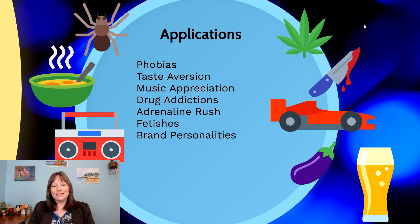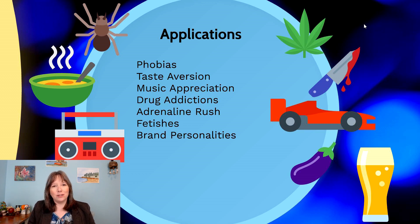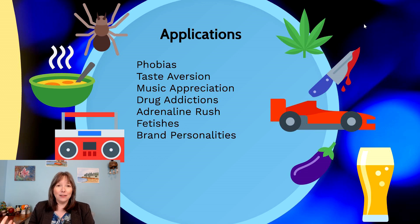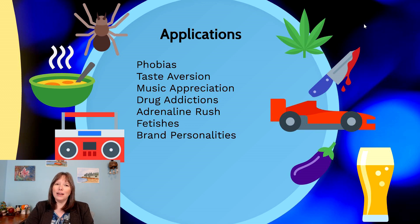We also have taste aversion — this is avoidance not out of fear but out of disgust. This can happen if you are eating something and you get nauseous or sick. It usually only needs one trial in humans to produce very strong taste aversion. This could happen even if you had a flu or something not related to the food at all, and your body will still blame the food.